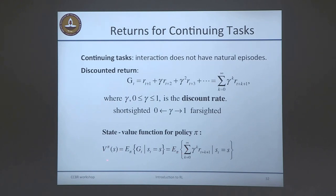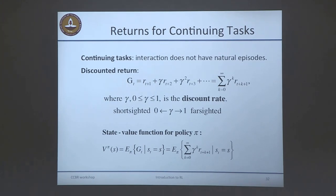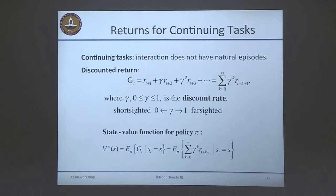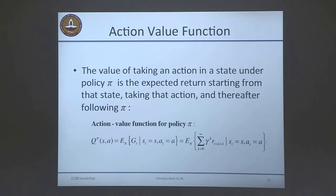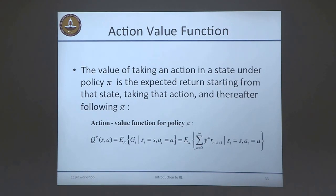What we're interested in is maximizing the expectation of this return. We call this the value function. The value function V^pi(s) associated with state s when following policy pi is the expected value of the return starting from state s, assuming every action is taken according to policy pi. This is essentially what Peter defined as the value in the previous talk. I'll also introduce the action-value function Q^pi(s,a): the value of taking action a in state s under policy pi, which is the expected return assuming you start in state s and take action a as your first action.